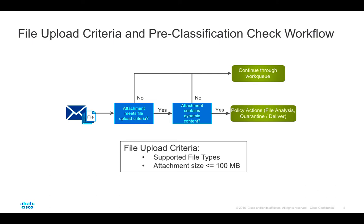If the file type and size criteria are met, the attachment continues to the ClamAV pre-classification check. This step determines whether there is any dynamic content — object streams, macros, or embedded executables — contained inside the file. This ensures that only files that could possibly be malicious are uploaded to ThreatGrid, while files with no dynamic content are not uploaded, avoiding unnecessary use of file upload limits. If either criterion is not met, the message continues through the work queue without uploading to ThreatGrid. If both are met, ESA assigns the corresponding policy action, such as uploading the file to ThreatGrid and placing the message into the file analysis quarantine.